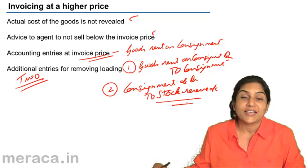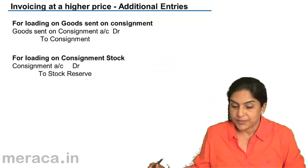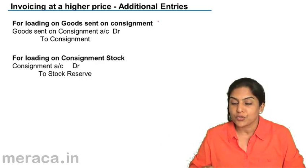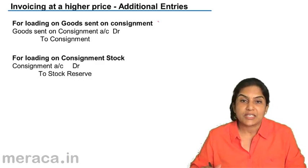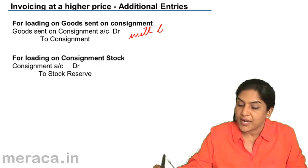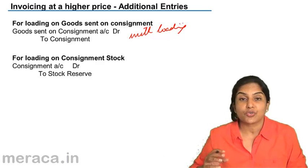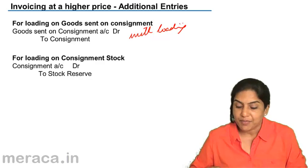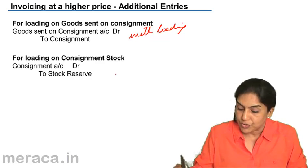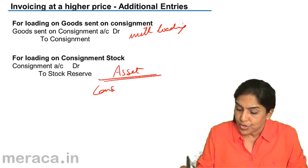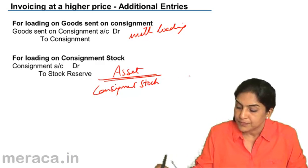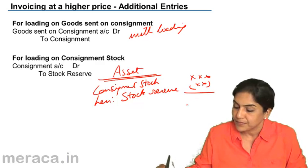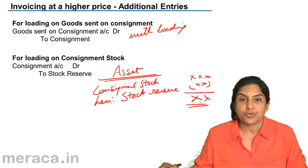Stock reserve would be shown as a deduction from the consignment stock account in the balance sheet. So, a quick revision: for loading on the goods, two additional entries. One is for the loading on the goods sent on consignment — goods sent on consignment account debit to consignment with the additional price. And for loading on consignment stock, which would have been valued at the higher invoice price, to remove the effect of this loading, the entry would be consignment account debit to stock reserve. On the asset side of the balance sheet, we would show consignment stock less stock reserve, and this would be the net value at which stock would be shown in the balance sheet.